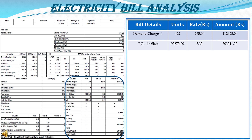EC1 — electricity charges 1 in the first lap. The total units consumed is 95,675 KWH. The electricity supply company charges 7 rupees 35 paise per KWH. Multiplying the units by the rate, the total amount calculated is 7,02,211.25 rupees.